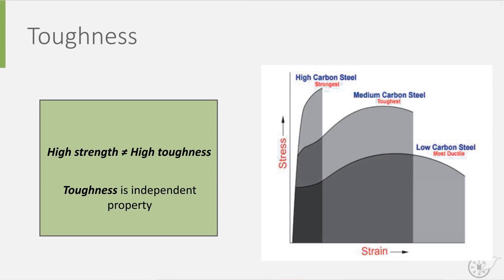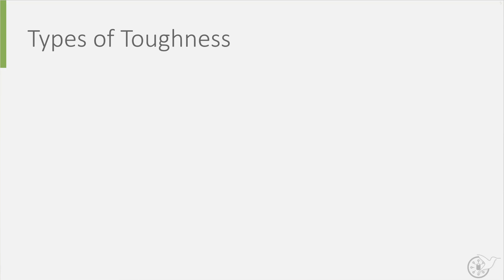Toughness is indeed a separate material property to consider when selecting a material for your design. There are different types of toughness, depending on how material breaks. I will discuss two types here.